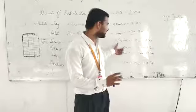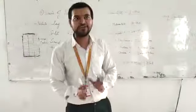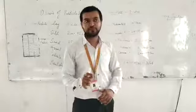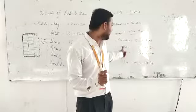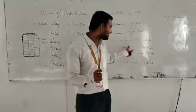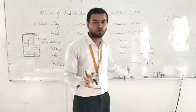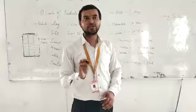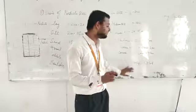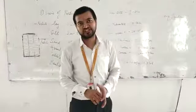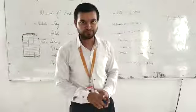The same classification has been done for sand as well. Sand has been classified into fine, medium, and coarse. Fine sand is 75 micron to 0.425 mm, medium sand is 0.425 mm to 2 mm, and coarse sand is 2 mm to 4.75 mm. This is the basic classification done from the particle size. Thank you.